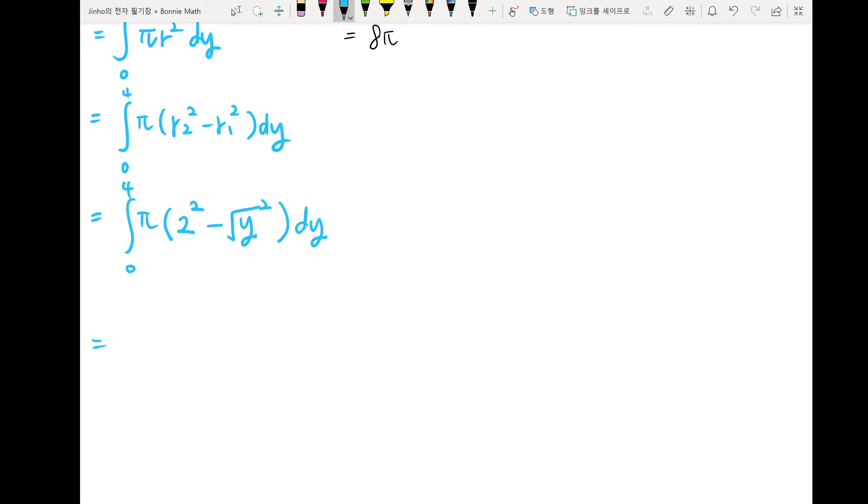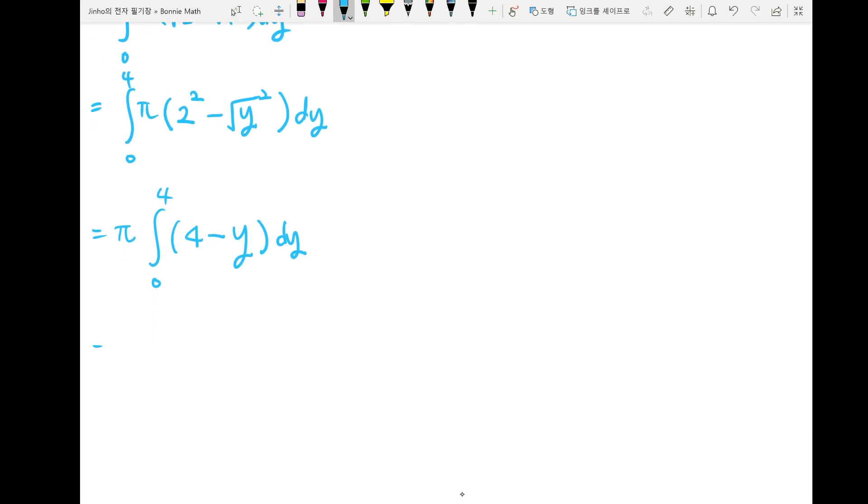So since π doesn't get affected by integral, we can take it out. π integral 0 to 4, 4 minus, this is root of y square, so y dy. Which is π times 4y minus 1 over 2 y square from 0 to 4.